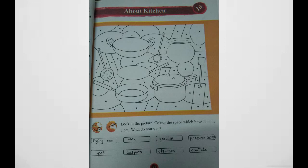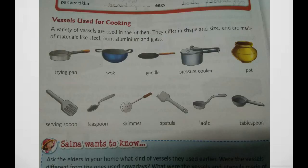Spatula, ladle, tablespoon, serving spoon, etc. A variety of vessels are used in the kitchen. They differ in shape and size and are made of materials like steel, iron, aluminium, and glass. The utensils used earlier were usually made of brass, clay, and copper, unlike the ones used nowadays like Teflon-coated and microwave-proof utensils.